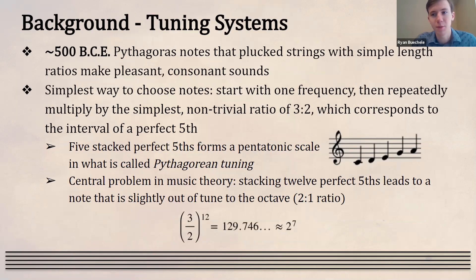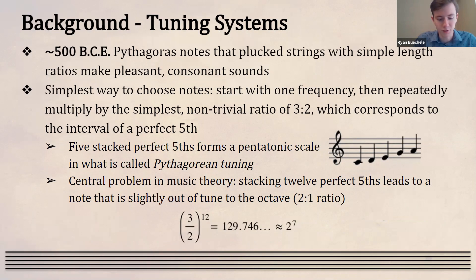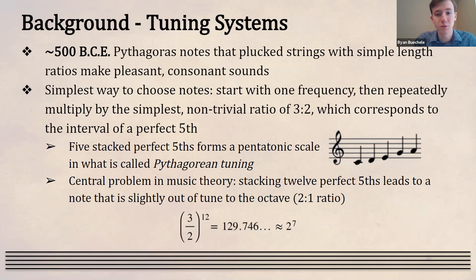Like many good stories, we begin in ancient Greece. The popular version is that Pythagoras heard a blacksmith using different sizes of anvils and noticed the differences in pitch. He went home, built a monochord, and studied pitch relations between strings of different length ratios. The simplest interval is an octave — a doubling of frequency, a two-to-one ratio. The next simplest is a perfect fifth, a three-to-two ratio. If you stack five perfect fifths, you get a pentatonic scale in Pythagorean tuning. A central problem in music theory is that stacking 12 perfect fifths — multiplying by three-halves 12 times — lands slightly out of tune with the note seven octaves higher: (3/2)^12 ≈ 129, not quite 128 = 2^7.